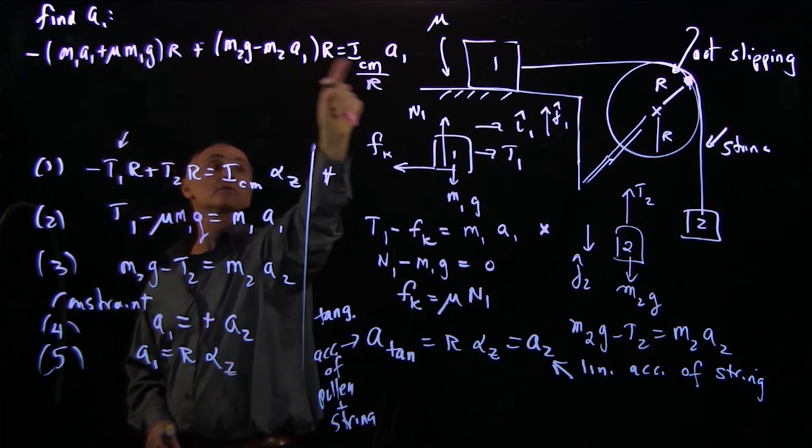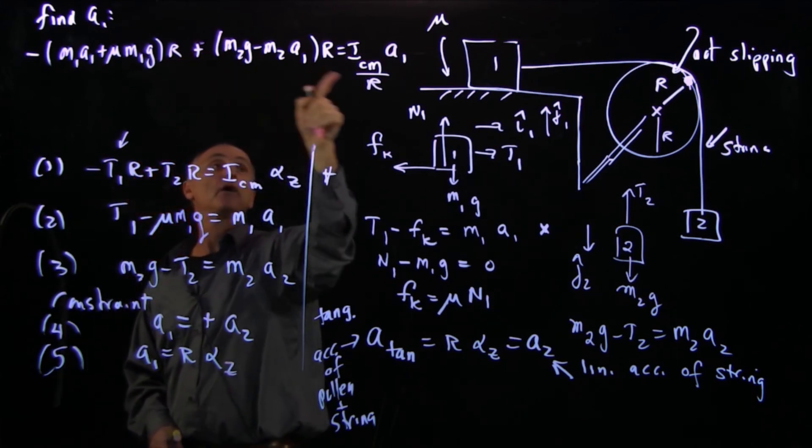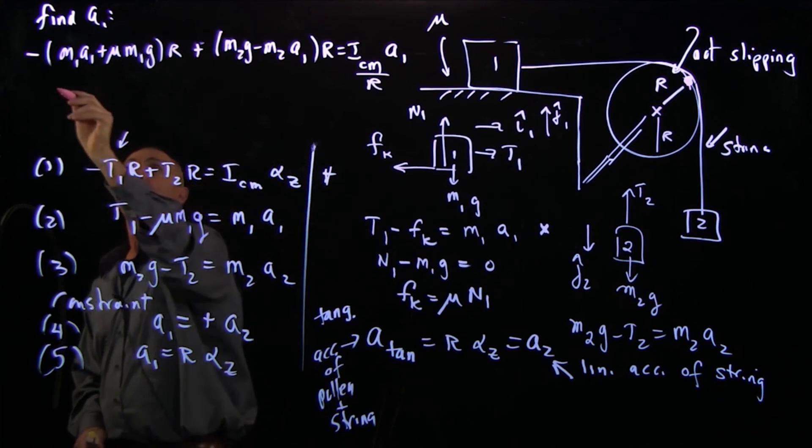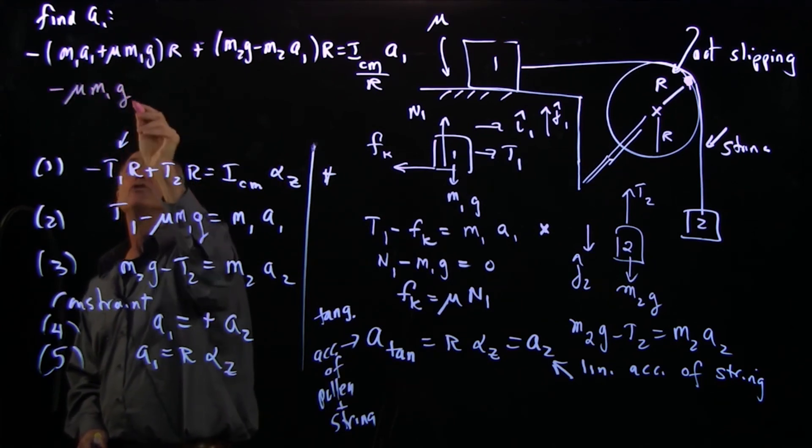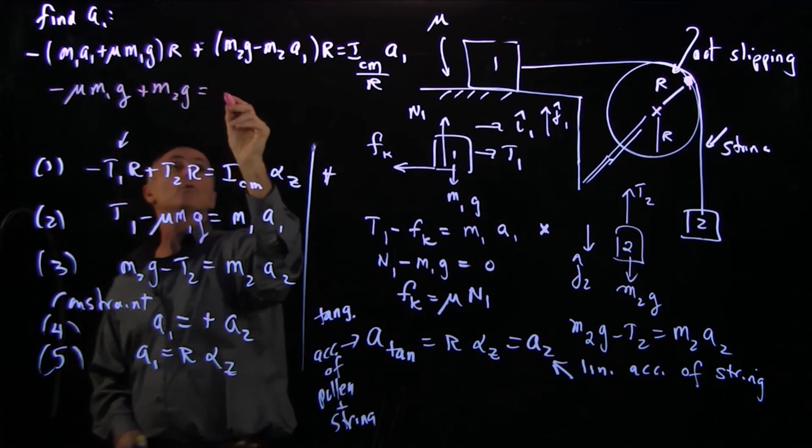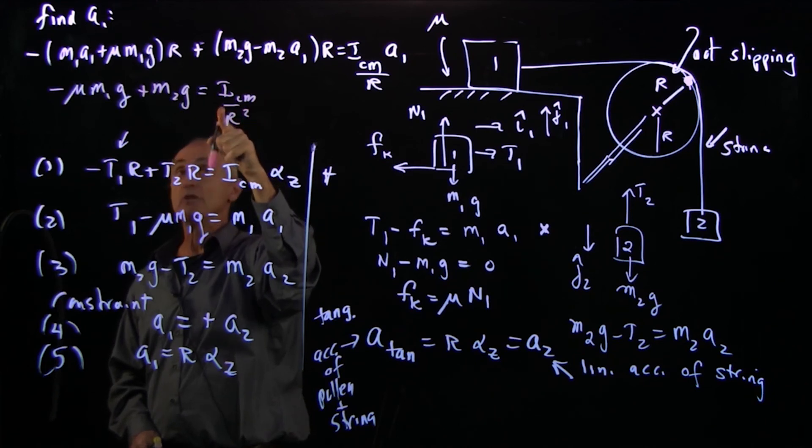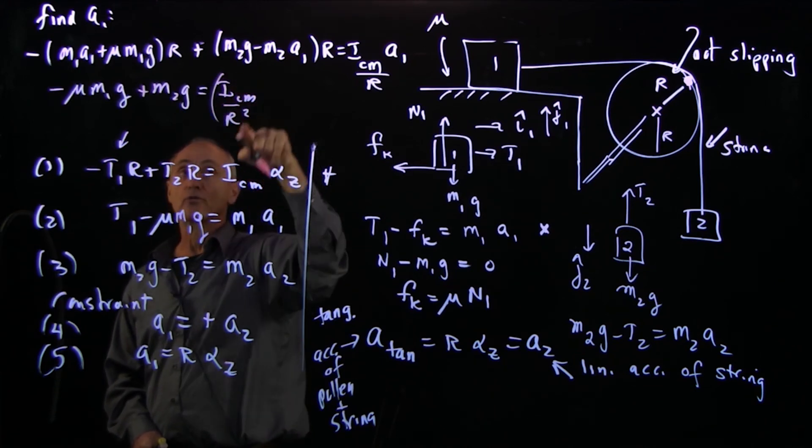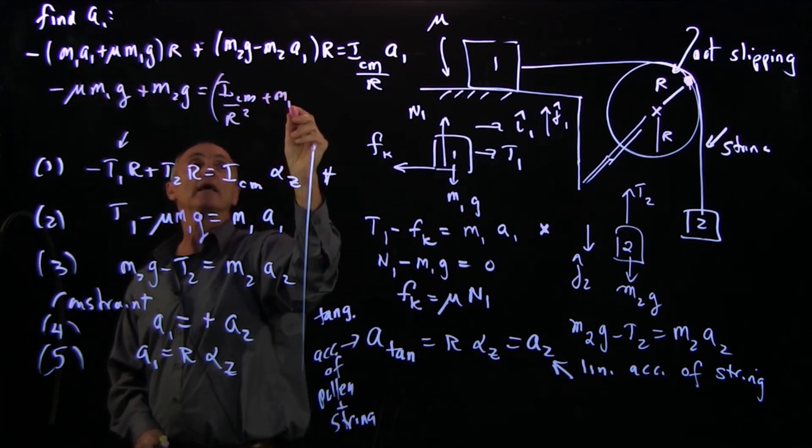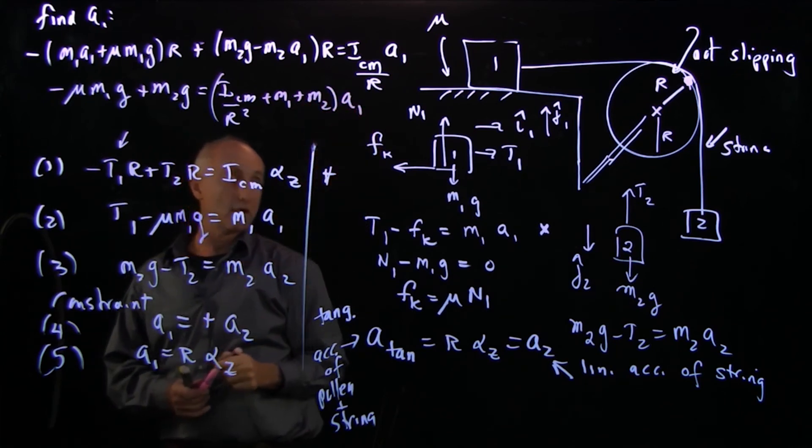So if I now can collect terms - minus, minus over here, but there's an r there, an r there - I'll divide through by r and bring my A1 terms over to the other side. And I'm left with minus mu M1g plus M2g equals ICM over r squared - that has the dimensions of mass because moment of inertia m r squared divided by r squared - plus M1A1 plus M2A1. And finally, as a conclusion,